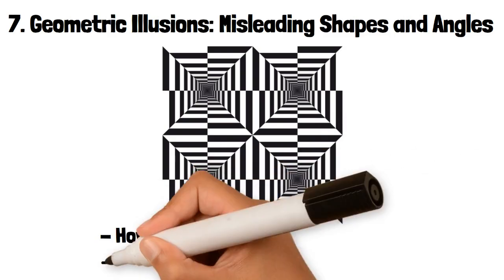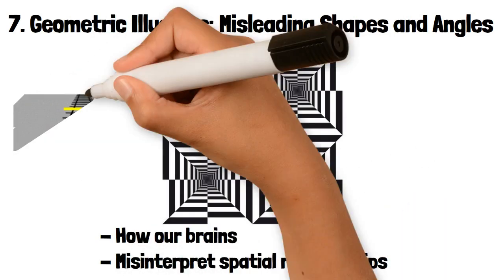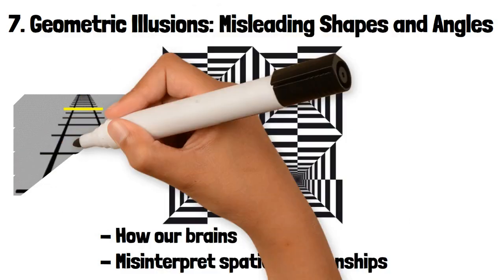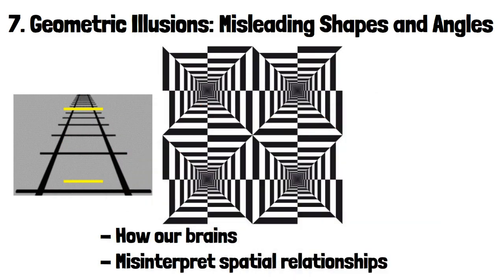These illusions demonstrate how our brains can misinterpret spatial relationships. The Ponzo Illusion is a classic example where two identical lines appear to be of different lengths because they are placed over converging lines, like railroad tracks, which create a sense of perspective.